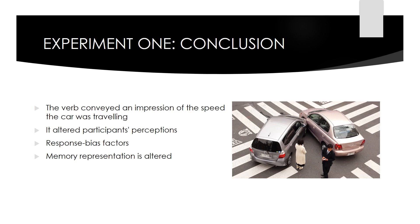Loftus and Palmer offered two possible explanations for these results. First, they considered response bias: the misleading information provided may have simply influenced the answer a person gave, but didn't actually lead to a false memory of the event. For example, the different speed estimates occur because the critical word — such as 'smash' or 'hit' — influences or biases a person's response. Secondly, they proposed that memory representation was altered: the critical verb changes a person's perception of the accident. Some critical words would lead someone to perceive the accident as more serious, and this perception is then stored in memory. If the second explanation is true, we would expect participants to remember other details that are not true. Loftus and Palmer tested this in their second experiment.